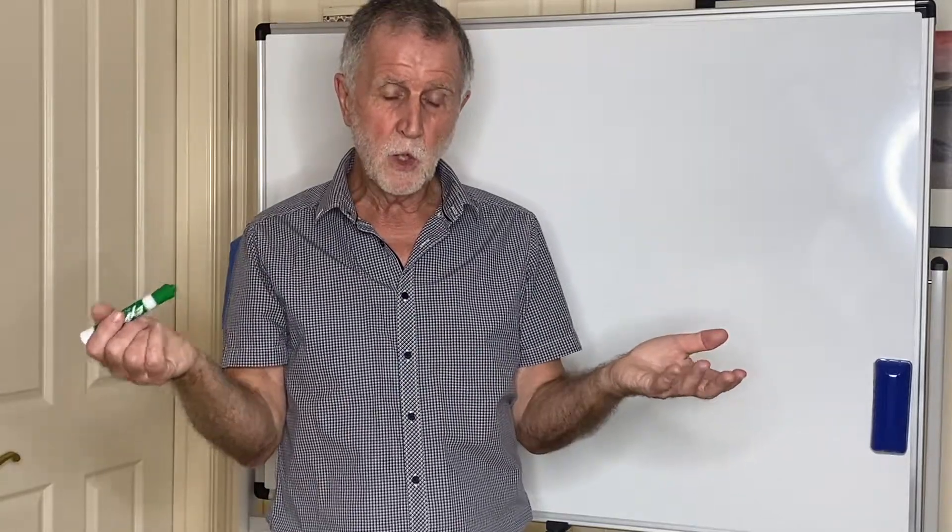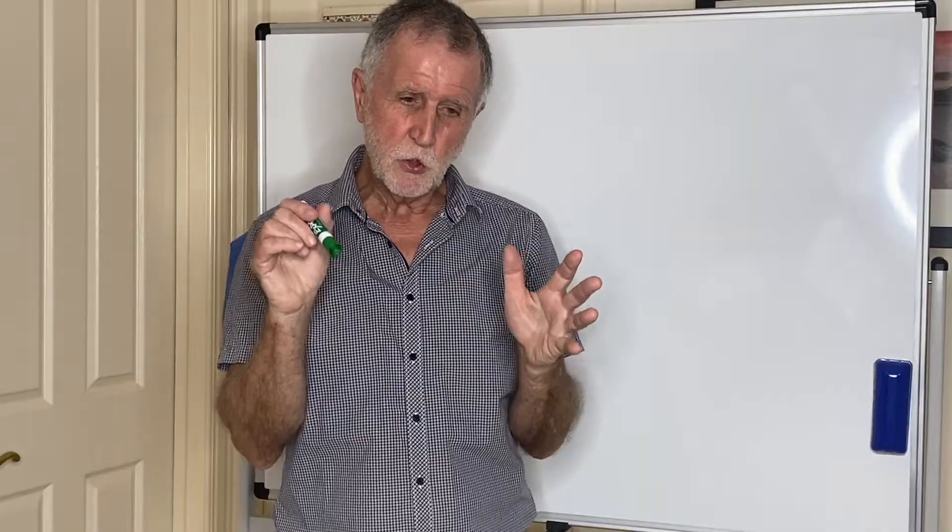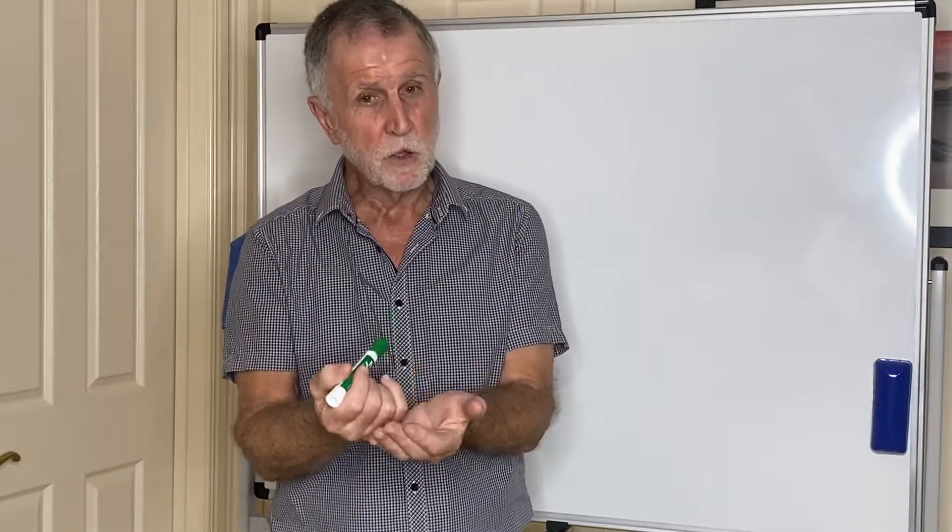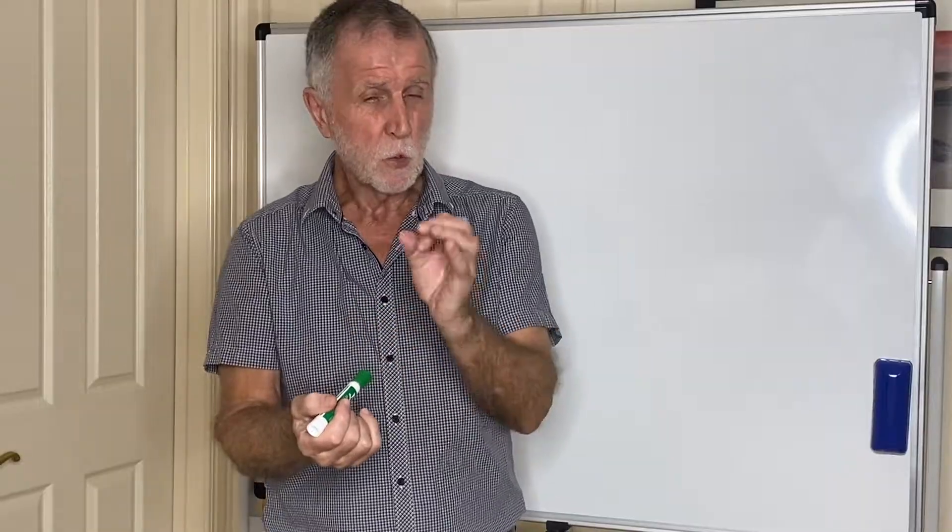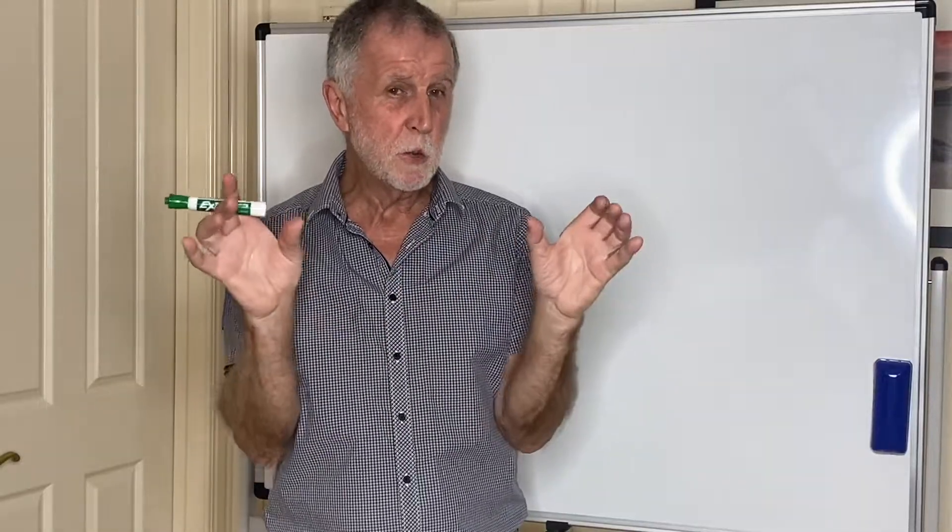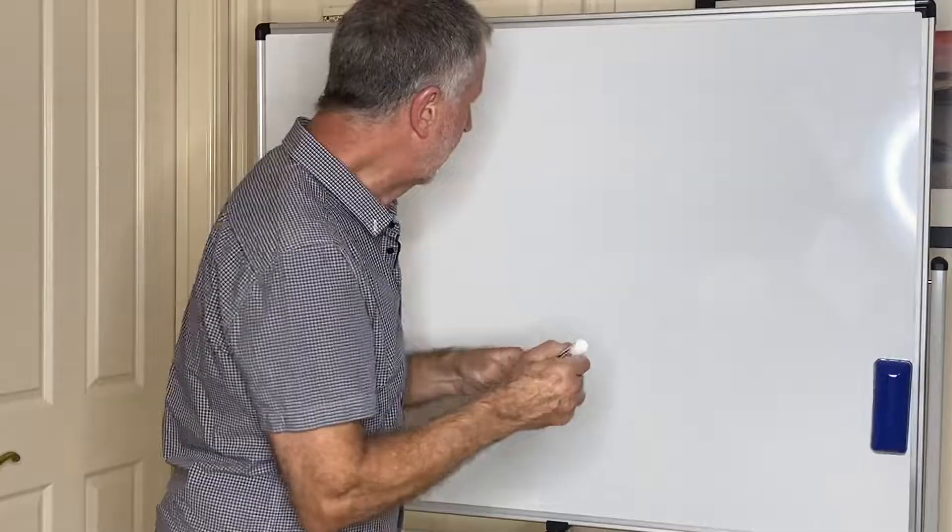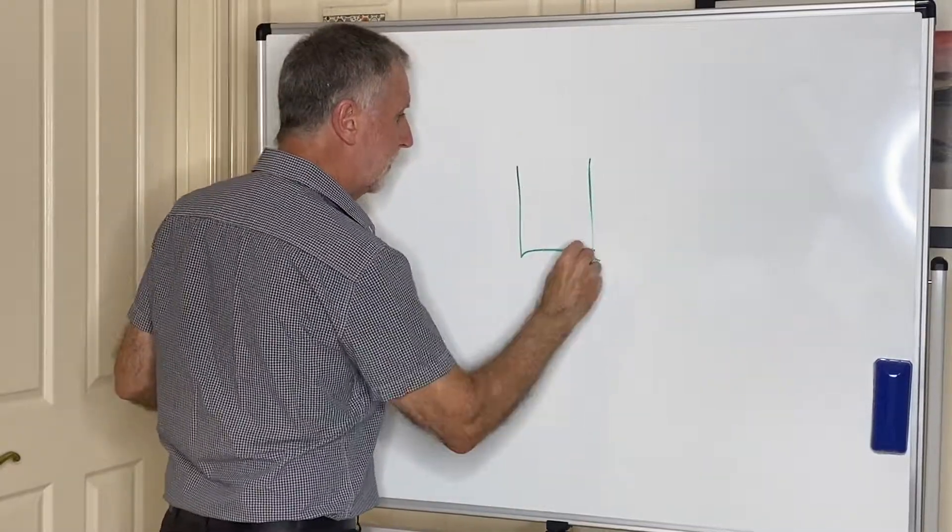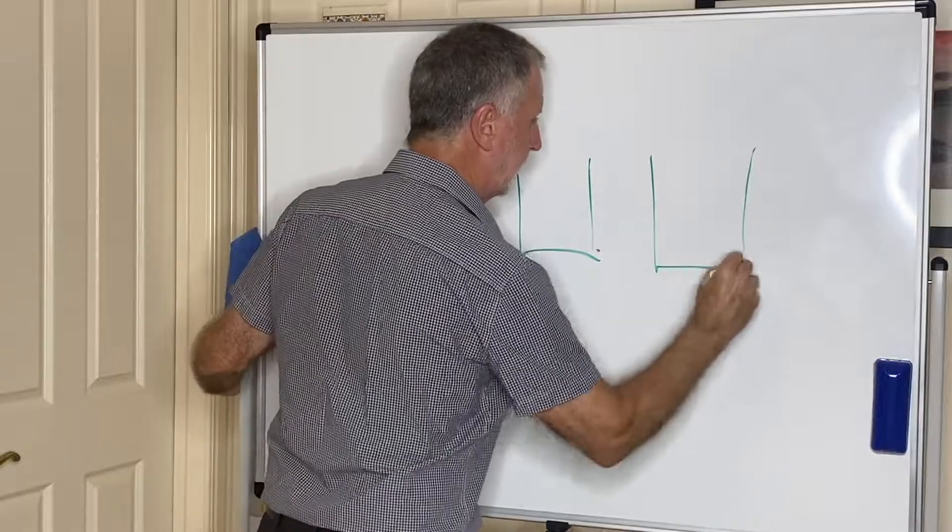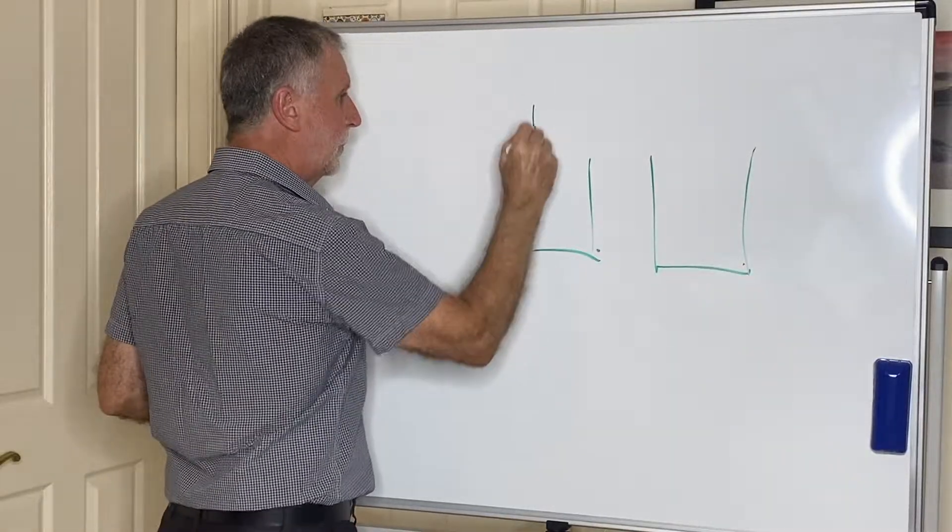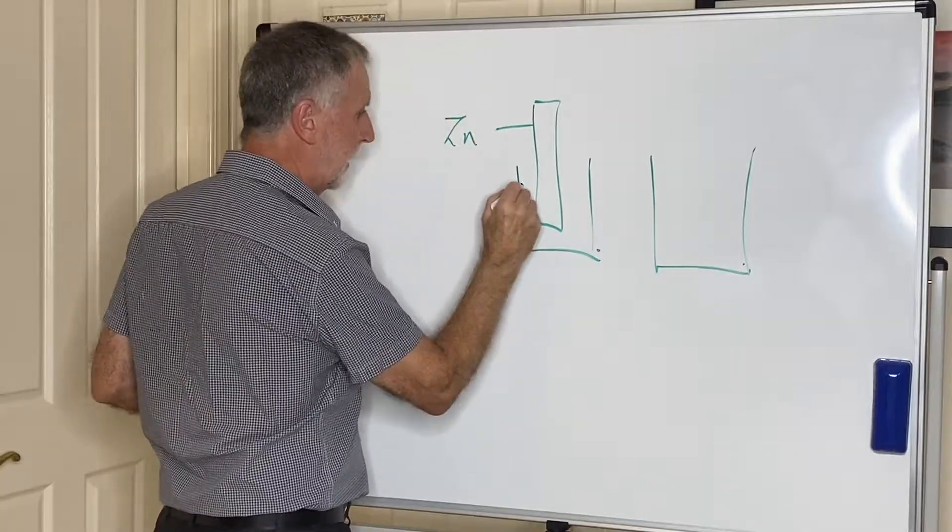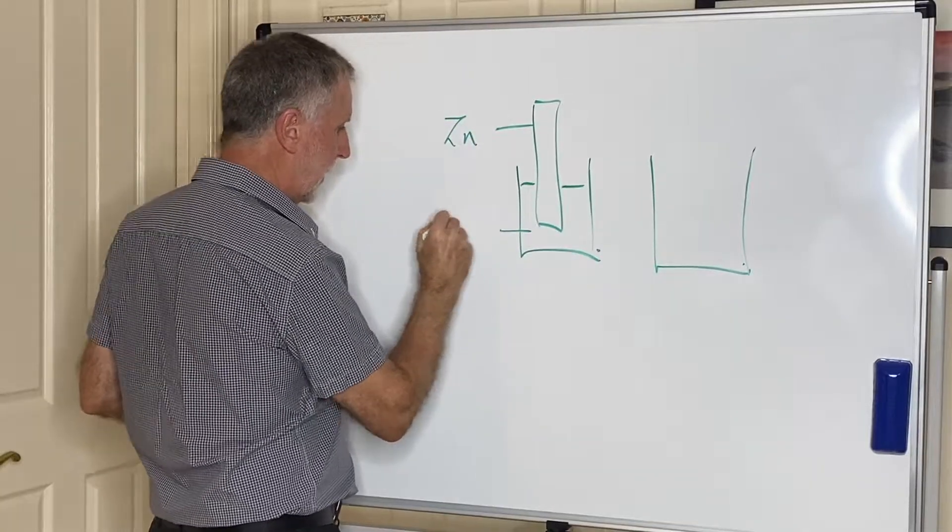We want the zinc and copper ions to react together, but we can't put them in the same container because then we would simply get a displacement and chemical energy would be produced. We need to use those two reactions to produce electricity, which is effectively a flow of electrons. So we need to put them into separate containers. We're going to have two beakers together. In the first one, we're going to put a zinc rod into its ions.